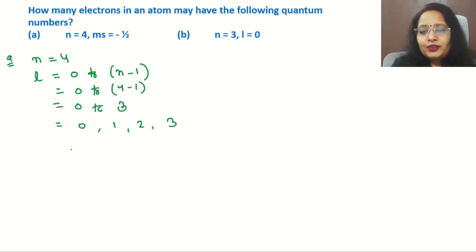We already learned that if L=0, it shows the s orbital. L=1 shows p, L=2 denotes d, and L=3 denotes f orbital. The next step is finding the number of orbitals in s, p, d, f.